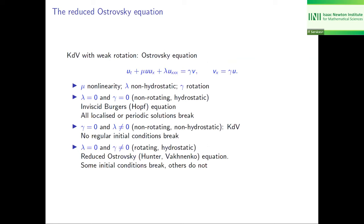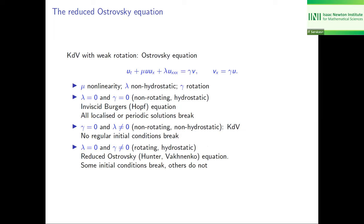What is the reduced Ostrovsky equation? You take the KdV equation and put it in a weakly rotating environment. You can think of this as the x-momentum equation, where the Coriolis term brings in the y-velocity, and the y-momentum equation, where the Coriolis term brings in the x-velocity. The parameters are: nu is the nonlinearity, lambda is a non-hydrostatic parameter, and gamma is our Coriolis or rotation parameter.